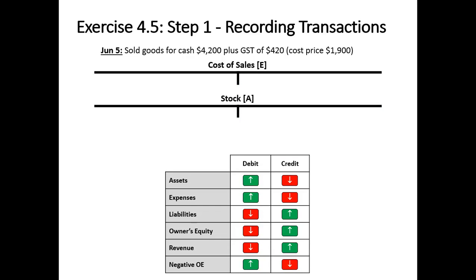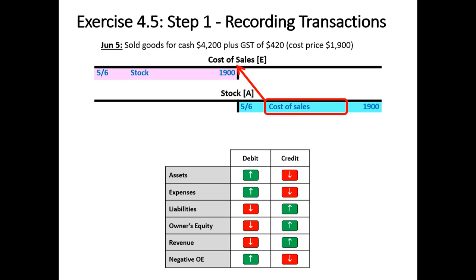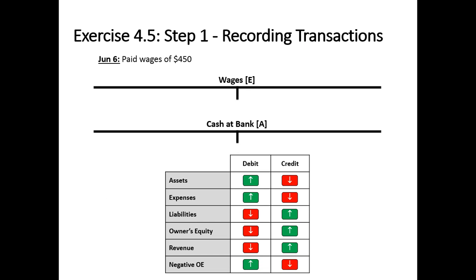Now let's deal with the cost of that sale. That was a $900 expense called cost of sales, so that'll be a debit, and we've got less stock in the form of assets so that'll be a credit. The debit will reference the stock ledger and the credit will reference cost of sales.